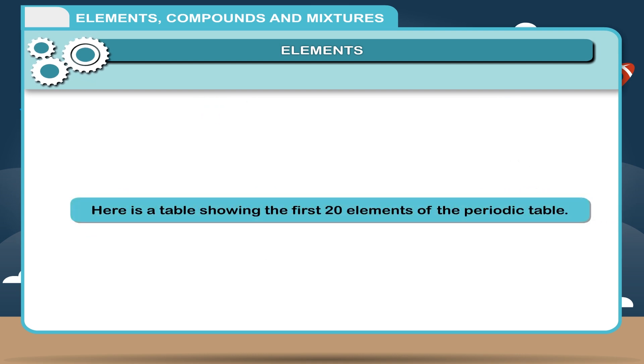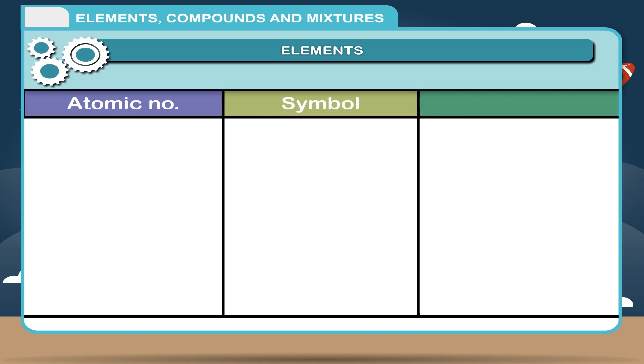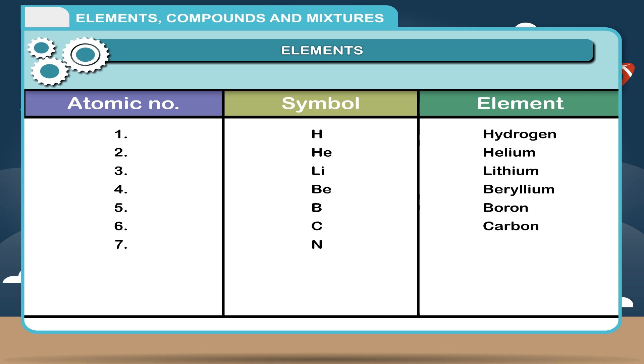Here is a table showing the first 20 elements of the periodic table. Atomic number, symbol, element: 1 H Hydrogen, 2 He Helium, 3 Li Lithium, 4 Be Beryllium, 5 B Boron, 6 C Carbon, 7 N Nitrogen, 8 O Oxygen, 9 F Fluorine, 10 Ne Neon.